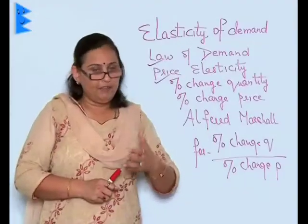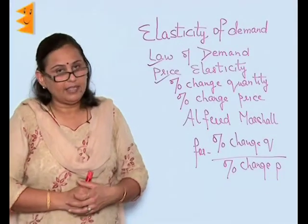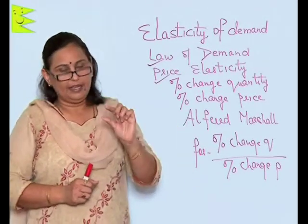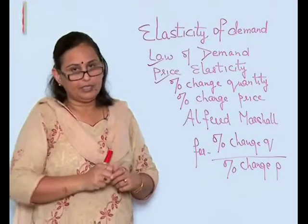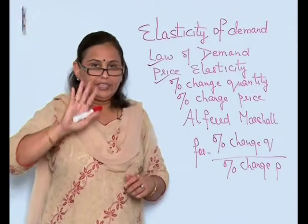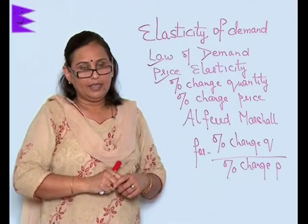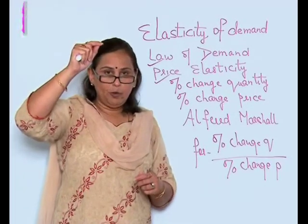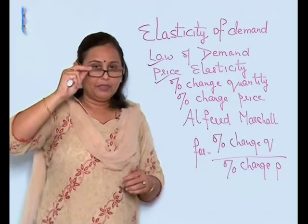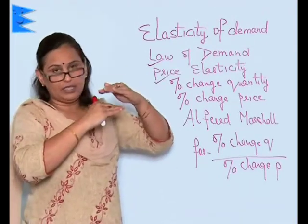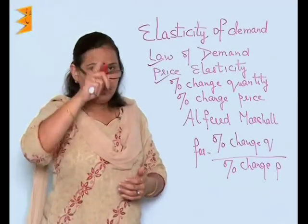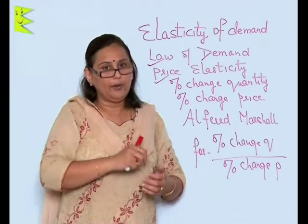But if we talk in layman's terms, it means that if a thing is of 2 rupees but the price of that commodity increases by 2 rupees, then the demand would go down a little less. Then if that 2 rupee commodity increases by 10 rupees, then the demand will come down drastically low.